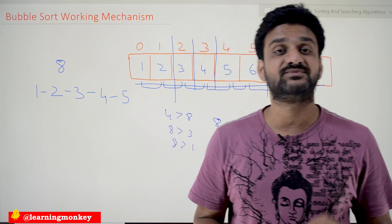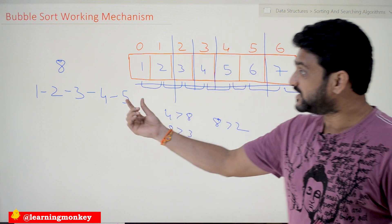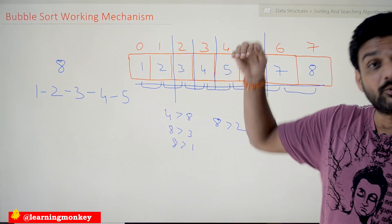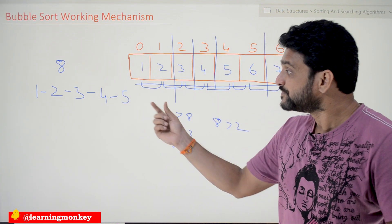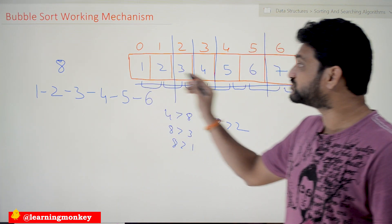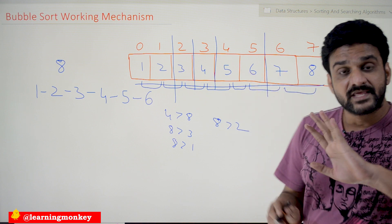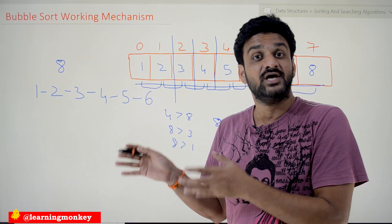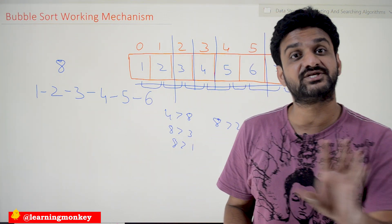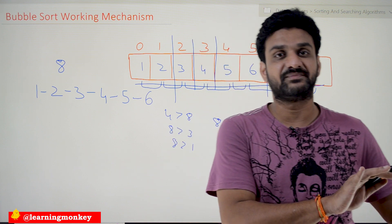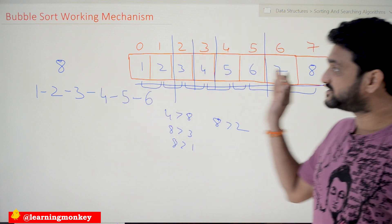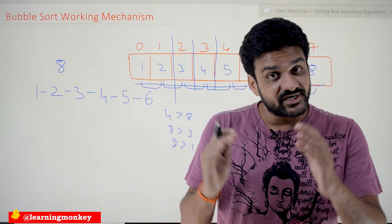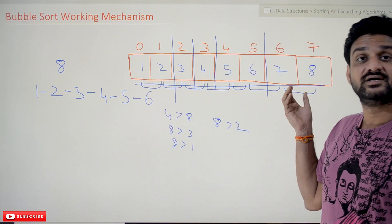The original bubble sort algorithm does all comparisons every time. However, there is another kind — the optimized bubble sort algorithm. In the optimized version, if there is no swap in an iteration — for example, in the sixth iteration no swapping is done because the elements are already sorted — the algorithm stops. There is no need to do further iterations if no swapping occurred, because elements are already in sorted order. That is what we call optimized bubble sort.